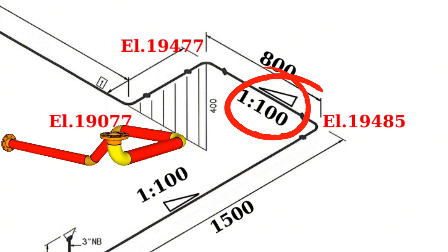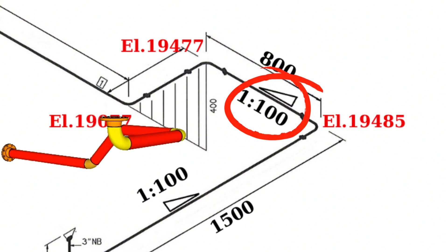Let's calculate slope ratio now. In this pipe isometric drawing, the slope at a horizontal distance of 800 is expressed as a ratio of 1 to 100.